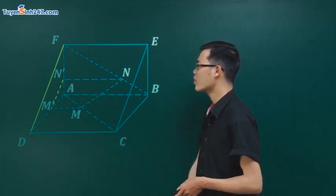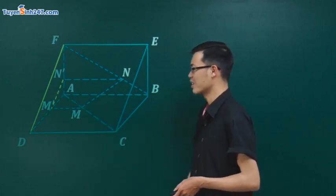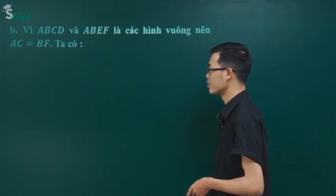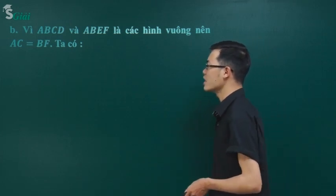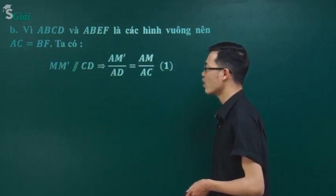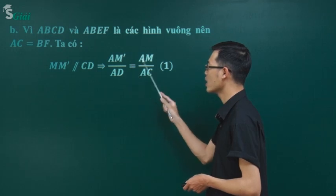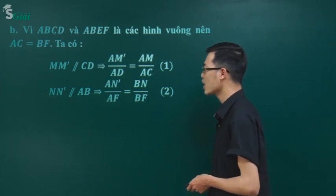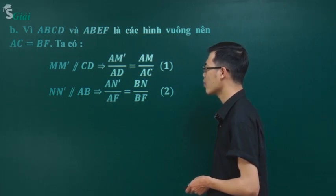Trình bày ý B đầy đủ: Vì ABCD và ABEF đều là hình vuông nên hai đường chéo AC và BF bằng nhau. Từ dữ kiện MM' song song CD theo giả thiết, kéo theo tỷ lệ AM'/AD = AM/AC. Từ NN' song song AB, xét tam giác AFB kéo theo AN'/AF = BN/BF.